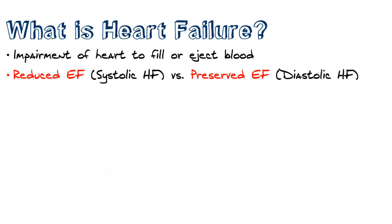Heart failure is described as an impairment of the heart to fill or eject blood properly. Heart failure is split into two different groups. One is called reduced EF, or reduced ejection fraction, otherwise known as systolic heart failure, versus preserved EF, or ejection fraction, otherwise known as diastolic heart failure. The causes and treatments of these two different types are vastly different, so it's important to understand that.